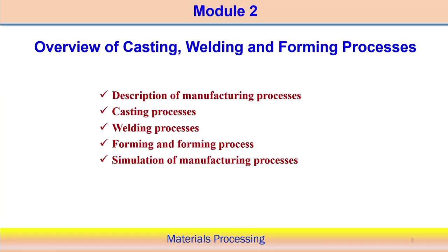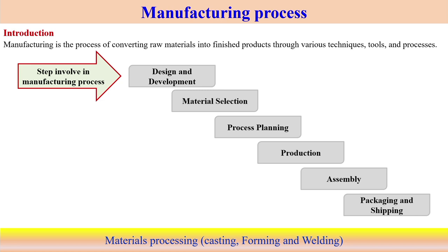We will start with the description of the manufacturing process, then the casting process and the different aspects of the casting process in terms of the difficulties in casting, and what we can design to some extent. Then we will also explain the different welding and forming processes and how metal forming is usually done. Apart from this, we will try to do some simulation or numerical examples to understand these basic manufacturing processes. Any manufacturing process is basically converting from raw materials into finished products, passing through several techniques, utilization of several tools, and several measurement techniques to get the actual finished product.